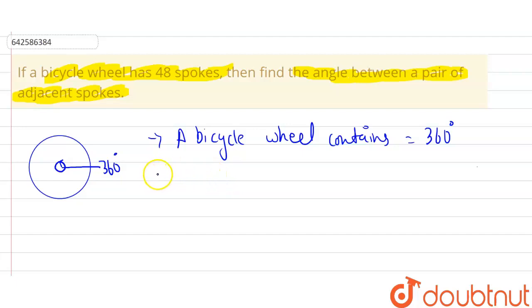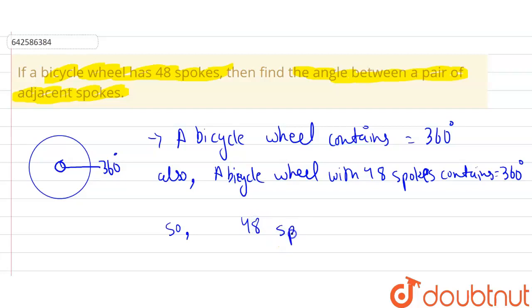Therefore, a bicycle wheel, also the same bicycle wheel with 48 spokes, contains how many angles? Again 360 degrees, because if we add spokes to it, then also it doesn't make difference to the angle. The angle will remain 360 degrees.